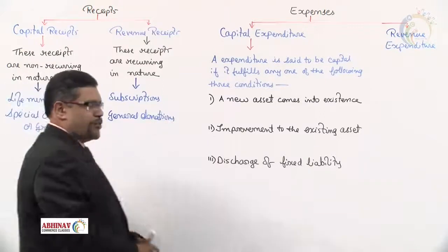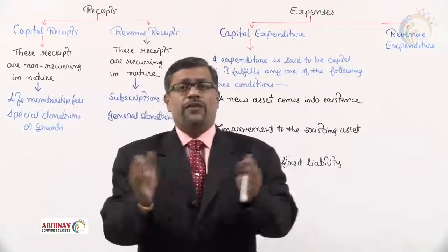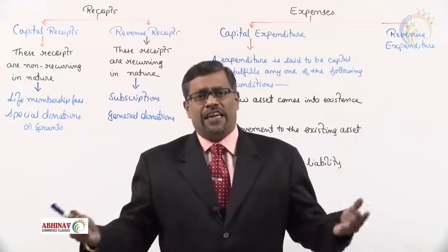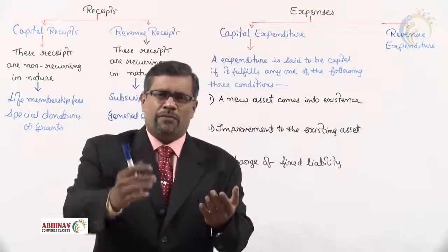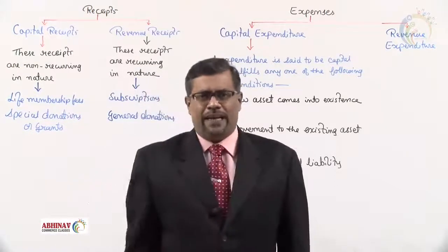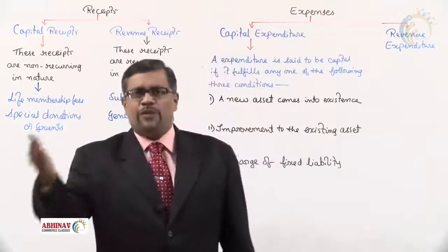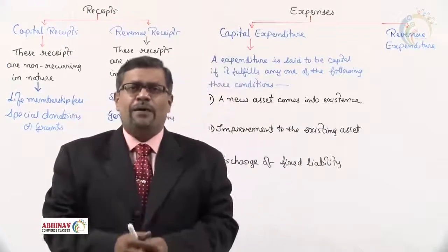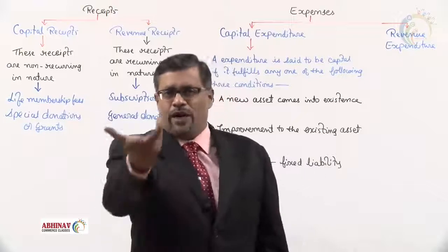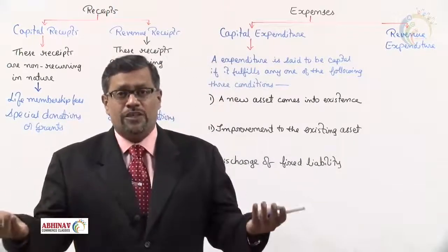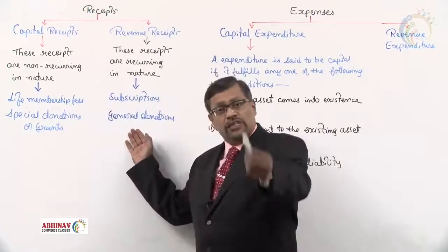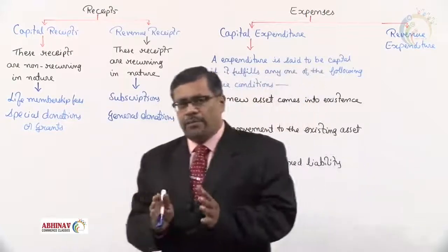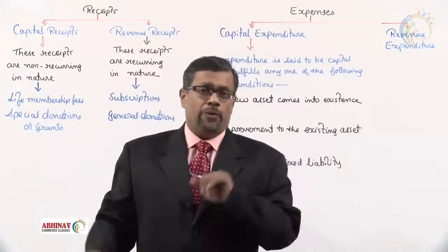General donations are small-amount donations, not of huge amounts. When persons come and say they run a charitable trust and need some donation, you give 100 rupees. After two or three months when they come again, you might give 200 rupees. General donations — without any specific purpose — can be received again and again. That is recurring, which means it has to be a revenue receipt.